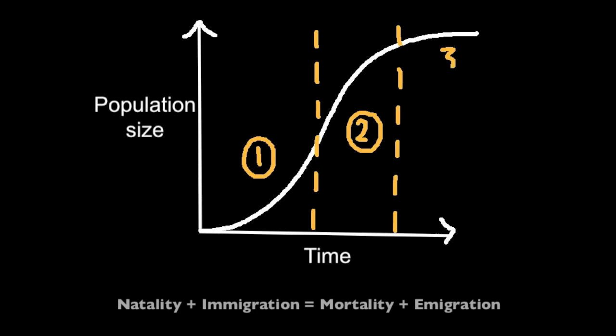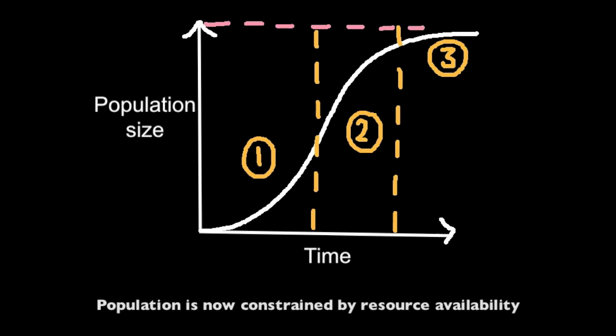The final plateau phase is where the levels of natality and immigration are equal to the levels of mortality and emigration. The maximum population size is determined by the carrying capacity of the habitat.